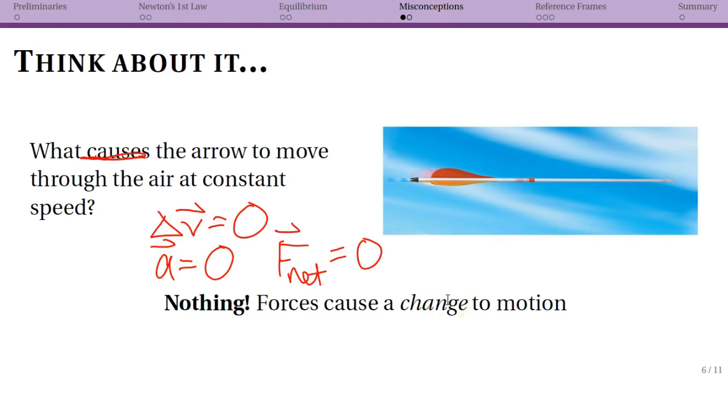So anytime that you have motion changing, you know that there is a cause which we call a force. But if the motion is not changing, well there's no net force in that case. There's not anything causing it to continue in a straight line. So this is something really important that a lot of students get tripped up on. So let me try to clarify that a little more.